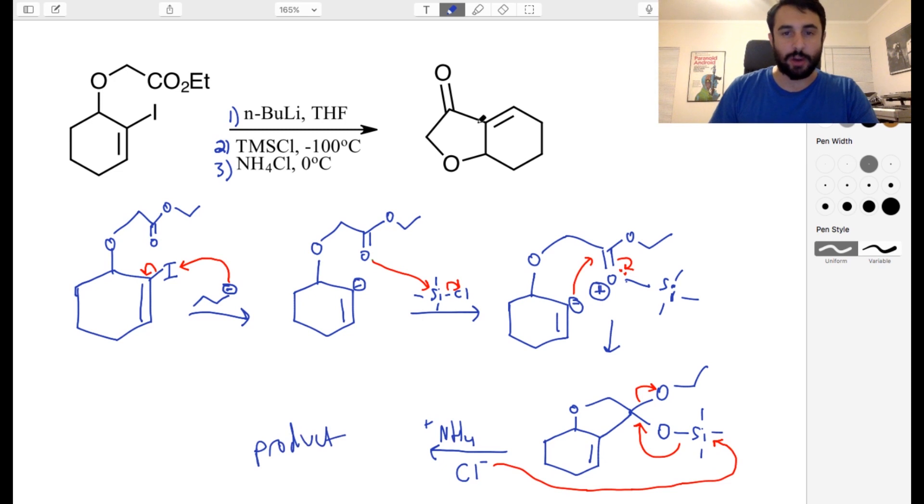And that actually is going to get us all the way to the product. So there we are. We've got our six-membered ring. We've got our new five-membered ring with the carbonyl and the oxygen. And so that's it.